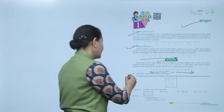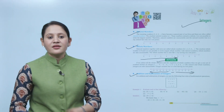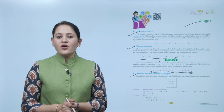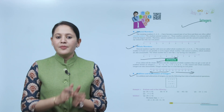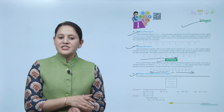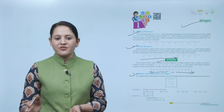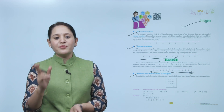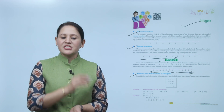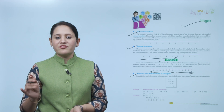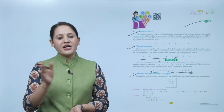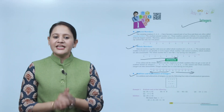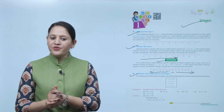As we move to the left from 0, all those are negative numbers and the value decreases as we move left. Next is addition and subtraction of integers. For addition and subtraction of integers we use the following rules: plus times plus equals plus; positive times negative equals negative. If we multiply two positive numbers, we get a positive number. If we multiply a positive and a negative number, we get a negative number. Negative times positive is negative; two negative numbers multiplied together give a positive number.